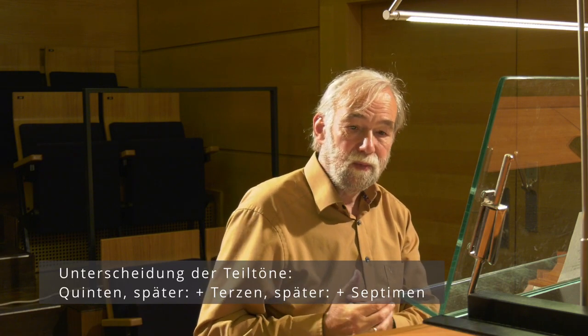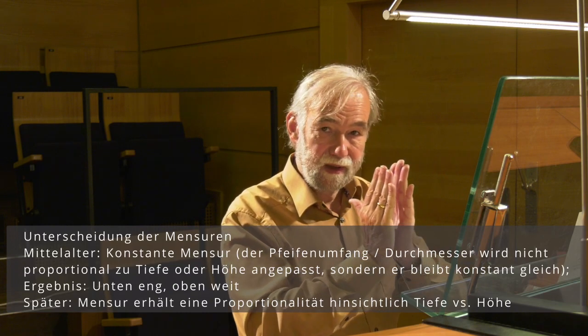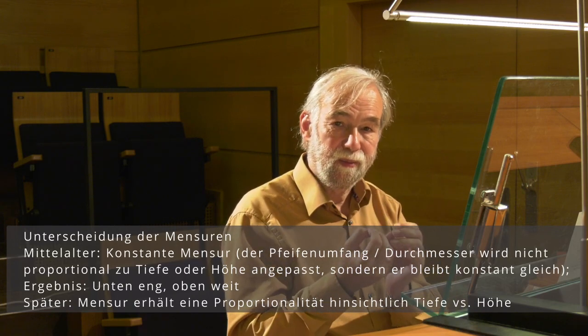Dann natürlich die Unterscheidung der Teiltöne, also der Obertöne, Quinten. Manche Orgeln haben keine Terzen, und erst im 19. Jahrhundert wird allmählich die Septime Teil einer Mixtur. Das heißt, die Teiltonreihe macht sich oft nur über die Quint bemerkbar, manchmal auch über die Terz. Metallpfeifen und Holzpfeifen unterscheiden sich auch in der Weitenmensur: eine Flöte hat Weitemensur, ein Prinzipal eher engere Mensur. Je weiter ich die Mensur verenge, komme ich zu den Streicherregistern, also zu einer Viola di Gamba oder einem Salizional. Derartige Farben wurden erst seit dem Ende des 17. Jahrhunderts erfunden.